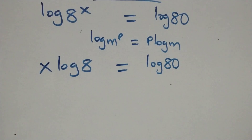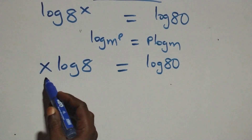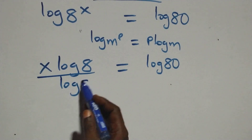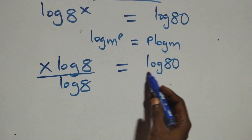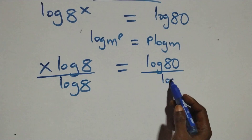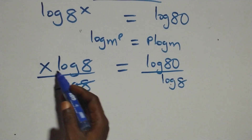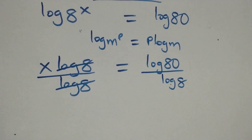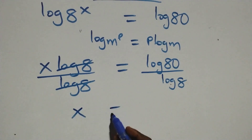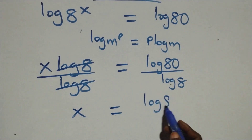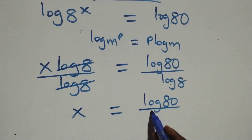Next, we divide both sides by log 8. Dividing both sides by log 8, the log 8 terms cancel each other, and we have x equals log 80 over log 8.